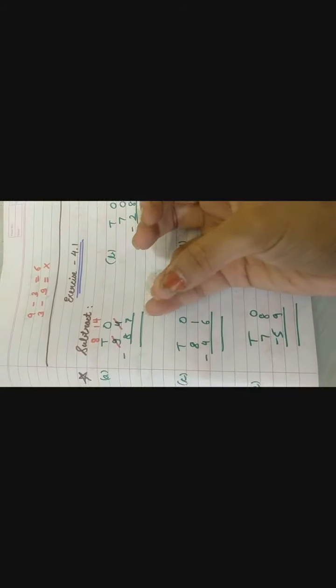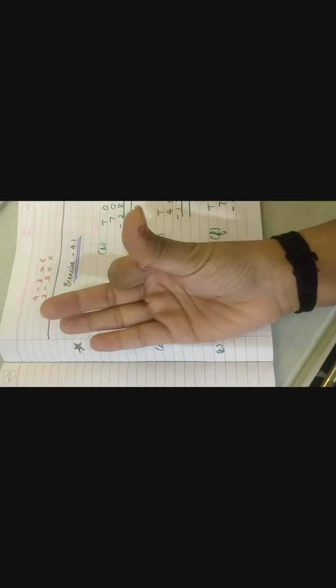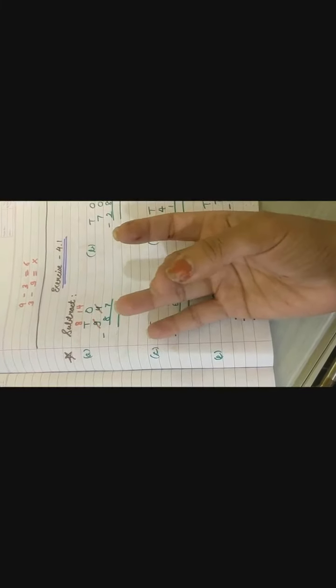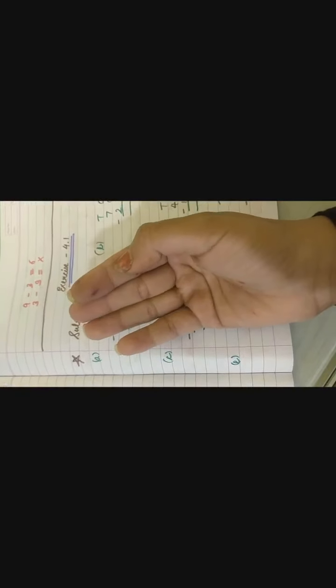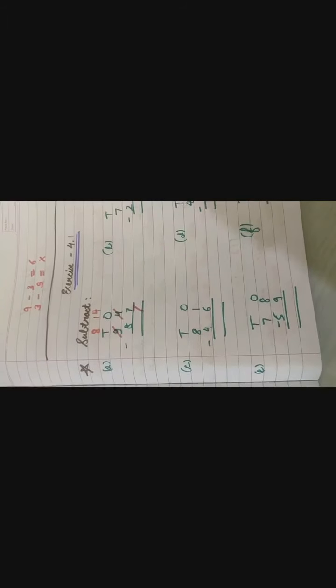Counting 1 to 14. Kitne cheezay hoi? 14. Isme se 7 cheezay maine kisi ko de di. To mere pas kitne bachayenge? Counting and removing 7, left with 7. Mere pas bachay 7. Now 8 me se 8 gaya. Aapke pas 8 cheezay theen aur 8 cheezay hain aapne kisi ko de di. You will get 0. Very good.